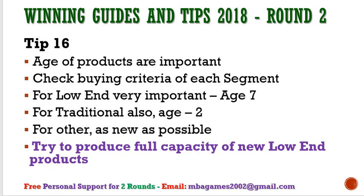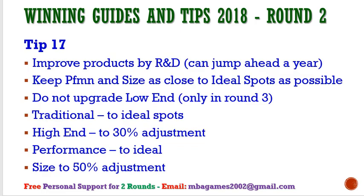Tip 16: Product age is important — keep products as new as possible. Update products each round and try to produce at full capacity. For the new low-end product, the most optimal production is about 150%, since the second shift costs slightly more. You can sell excess capacity now if needed, but next round demand will be higher. In Rounds 1 or 2, sell some capacity from traditional and high-end to free up funds for investment, then add new capacity as needed following the broad differentiation strategy.